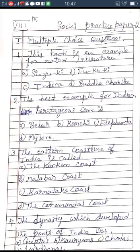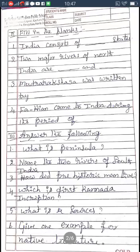Fill in the blanks for paper two: India consists of blank states. The two major rivers of North India are Ganga and Brahmaputra. Mudra Rakshasa was written by Vishakhadatta. Fahien came to India during the period of the Mauryas.